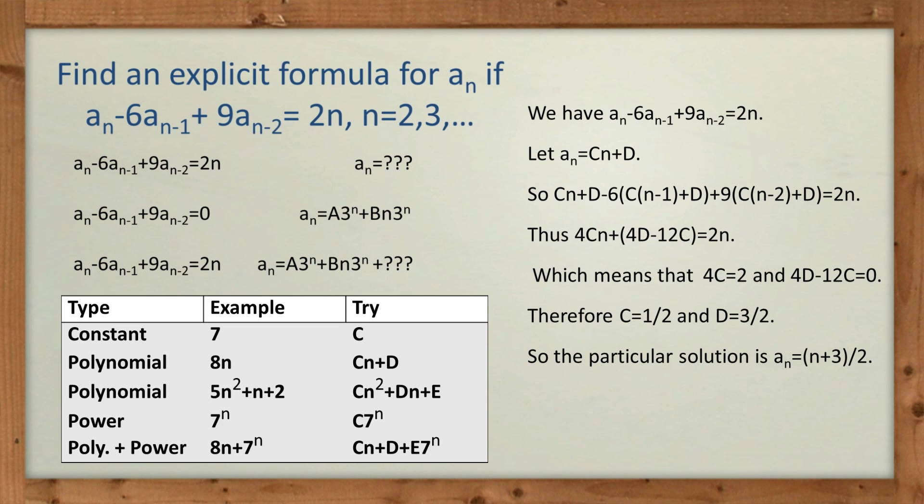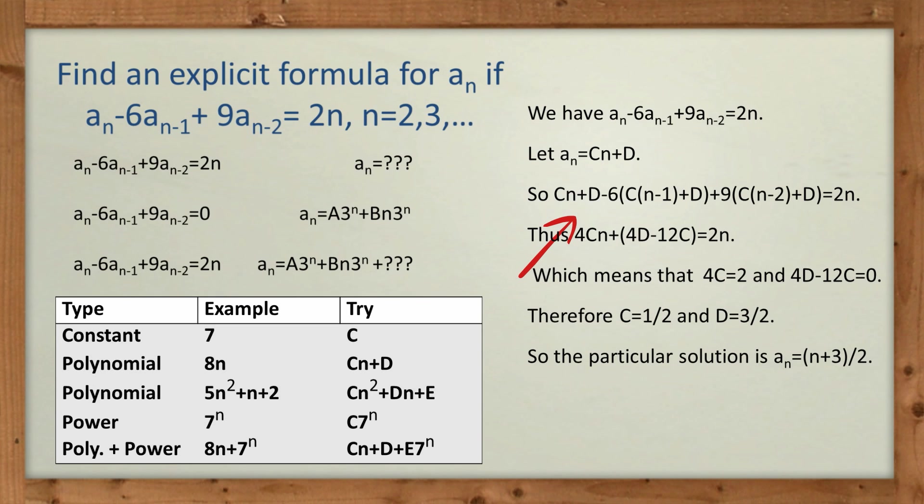So if we let a_n equal C*n plus D, and we put it into our recurrence relation, you can see here, I've got the C*n plus D. And then this bit here, well, that's really C times (n-1) plus D. So that's the a_n-1 term. And then here you can see the a_n-2 term, and it equals 2 times n. Then we simplify the equation and we get this expression or equation with an n term and then a constant type term, and it equals 2 times n. Now this has to be true for all n. And so the only way that can be is if 4C equals 2, that's equating the n terms, and 4D minus 12 equals 0, that's equating the constant terms. And therefore, we get C equals 1/2 and D equals 3/2.